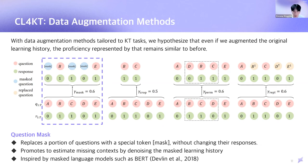First, question mask, which is inspired by masked language models such as BERT. This replaces a portion of questions with a mask token without changing their responses. This promotes to estimate missing context by denoising the masked learning history.